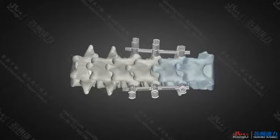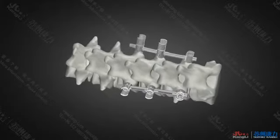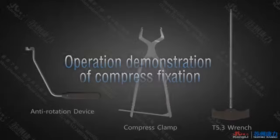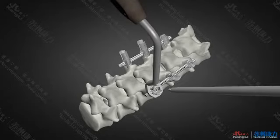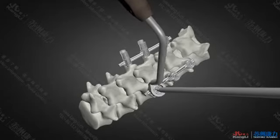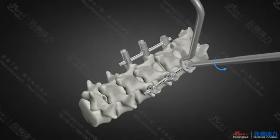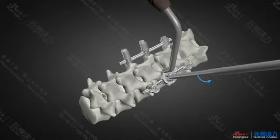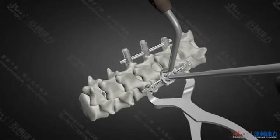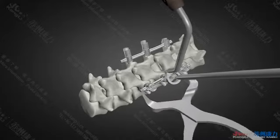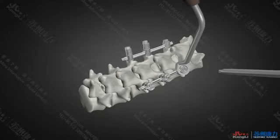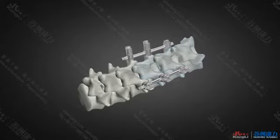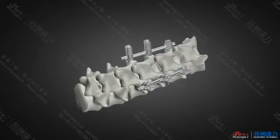Repeat the above to finish the operation on the other side. Operation demonstration of compress fixation. Use the T5.3 wrench and anti-rotation device to fix the plug screw on one side while the plug screw on the other side is loosened. Place the compress clamp and compress slowly to the proper state, then wrench the loosened plug screw and finish the compress fixation. Repeat the above to finish the operation on the other side.